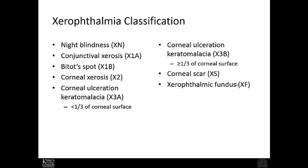In terms of deficiency disease, the classification of xerophthalmia starts with night blindness, then progresses through conjunctival xerosis, Bitot spots forming, corneal xerosis, corneal ulceration and keratomalacia, eventually leading to corneal scarring and a xerophthalmic fundus — at which stage blindness occurs, much more severe than just night blindness.